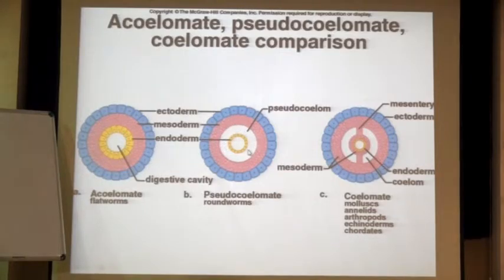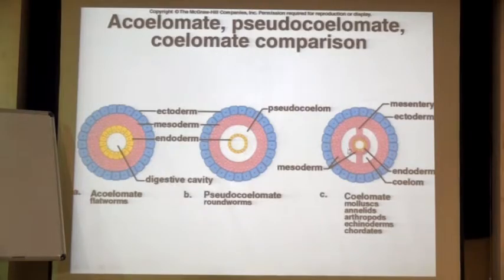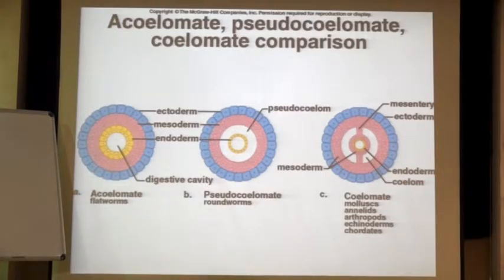There is no mesoderm in pseudocoelomates. When you say true coelom, you are going to have mesoderm coming into existence. The mesoderm is present only on one side here — it's not present on the other side. So if mesoderm is present on two sides, you have a complete cavity in between the mesoderm layers.